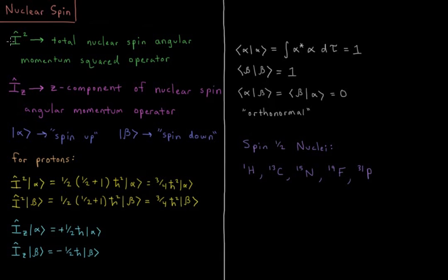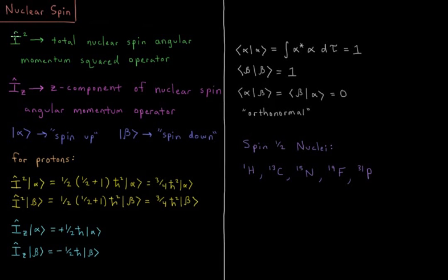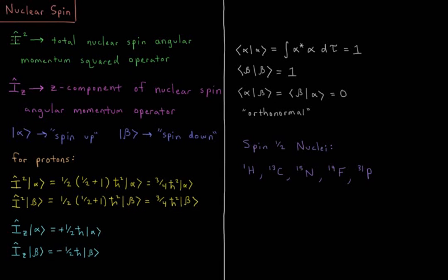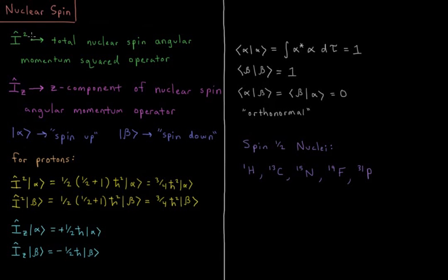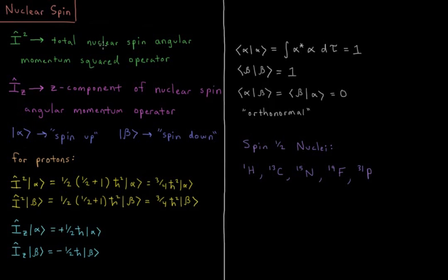The first being I squared, the total nuclear spin angular momentum squared operator. That works pretty close to the total angular momentum operator we've already seen in chapters on the rigid rotor and the hydrogen atom, except now it's acting on nuclei. It's acting on the protons and neutrons inside of a nucleus because those can have spin as well, just like electrons can.